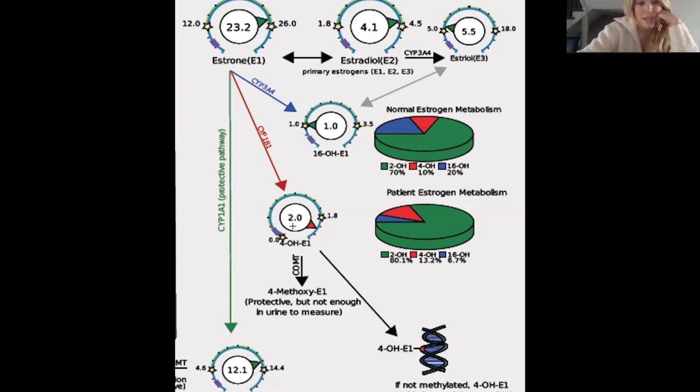E1 can also go through phase one detoxification to form 4-OH and 16-OH. 4-OH here, if it's not methylated, if it does not go through this COMT pathway and become methylated and excreted, it can cause DNA damage. These are adducts that are forming, and this damages DNA. We all have DNA damage, and fortunately we have protective mechanisms in our body to help repair that damage. But if it's overburdened with too much damage, that's where it's becoming an issue and increasing risk for estrogen-dependent cancers.